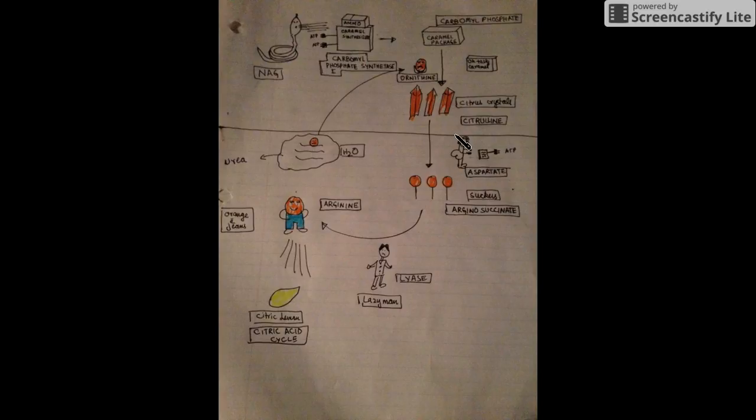And here we have another enzyme called aspartate. Look, his smarty pants friend with big ass here. And just remember that we are getting the second nitrogen that is present in ammonia from aspartate. So here aspartate along with one ATP will convert citrulline into argininosuccinate, suckers succinate, argininosuccinate.